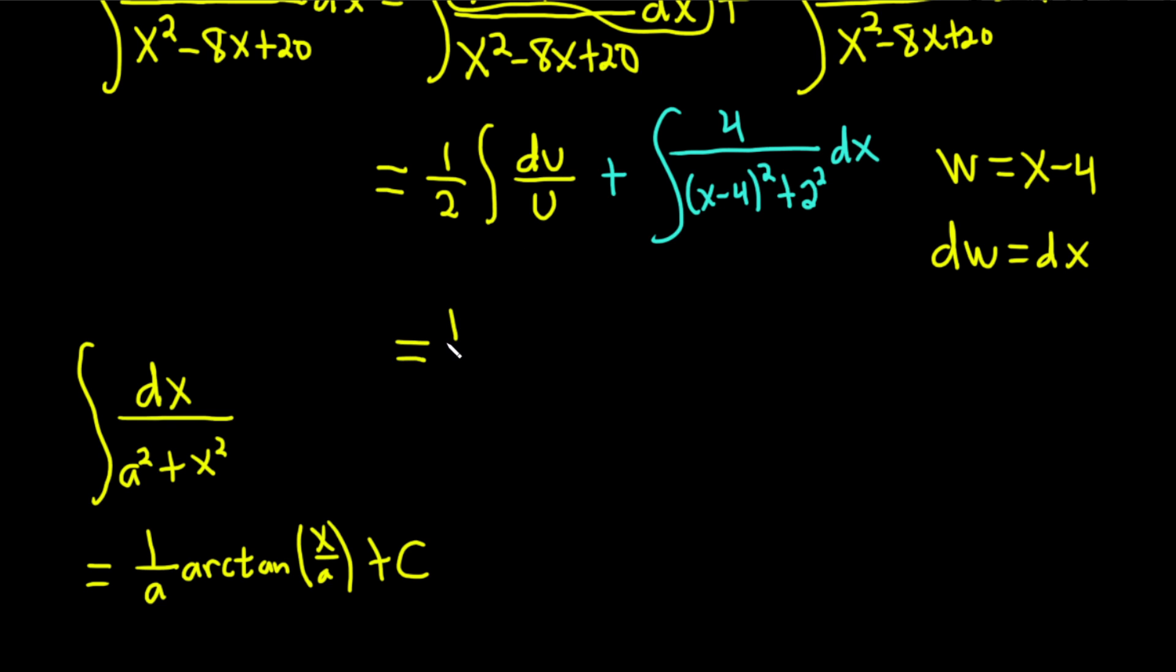So this is equal to, we can integrate this one, 1 half ln absolute value of u. That's what the formula tells us. But u was x squared minus 8x plus 20. And then this one, I'll show the step where we make the substitution. So it just becomes 4 over w squared plus 2 squared, dw. So fitting this formula, a is 2. And x is w.